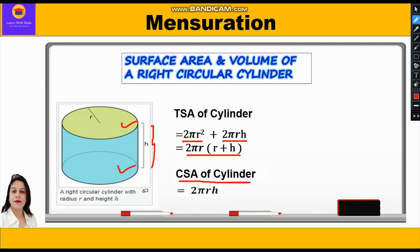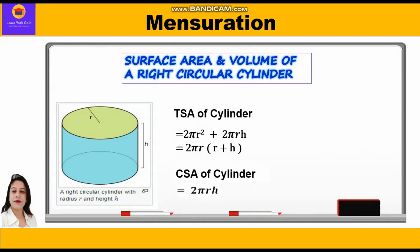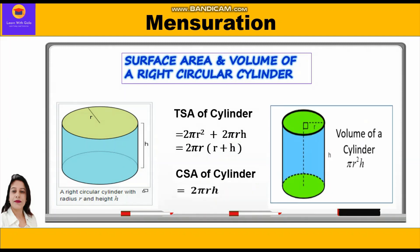The curved surface area of the cylinder is the circumference of the base into height, so it is 2πrh. The volume of a cylinder is always the area of the base into height, which gives us πr²h.